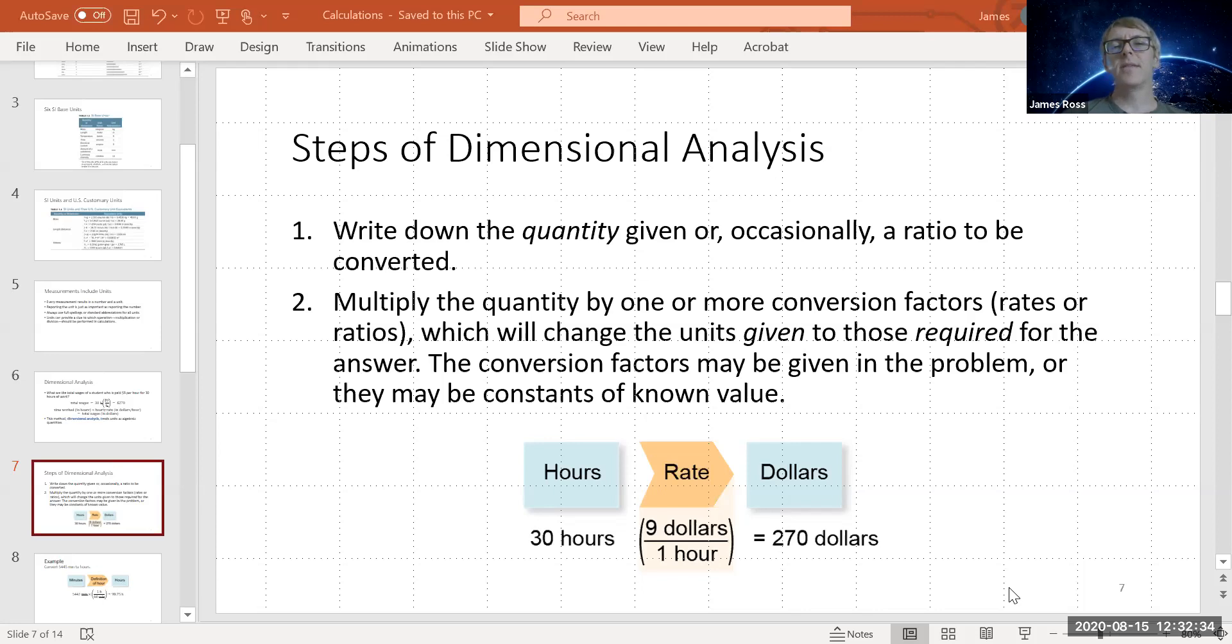Dimensional analysis is also known as factor labeling. Essentially, it's looking at fractions. So dimensional analysis is looking at fractions. For example, you convert equalities to fractions.